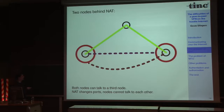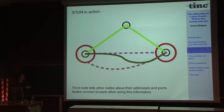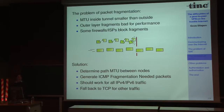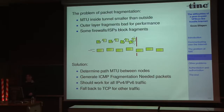Another problem is packet fragmentation on VPNs. If a packet on your VPN is already the maximum size the network allows, encapsulating it in a new packet makes it larger, and it gets fragmented by the operating system. This hurts performance, but more critically, some ISPs and firewalls block fragments, which breaks most of your VPN traffic. Our solution is to determine the path maximum transfer unit (PMTU) between nodes. When a node needs to fragment a packet, the tinc daemon generates an ICMP fragmentation-needed packet telling the original sender to reduce the packet size.